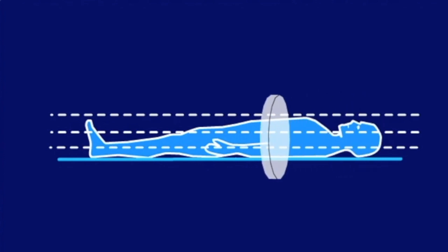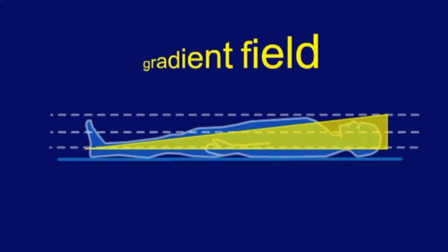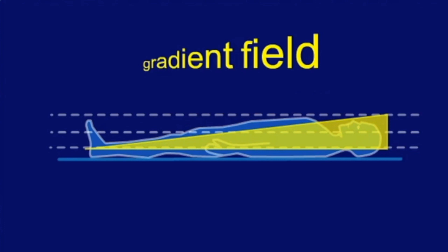To examine a specific slice only, a second magnetic field is superimposed on the external field which has different strengths in varying locations. The magnetic field is therefore stronger or weaker in some places than in others. This additional field is called a gradient field and is produced by the so-called gradient coils.